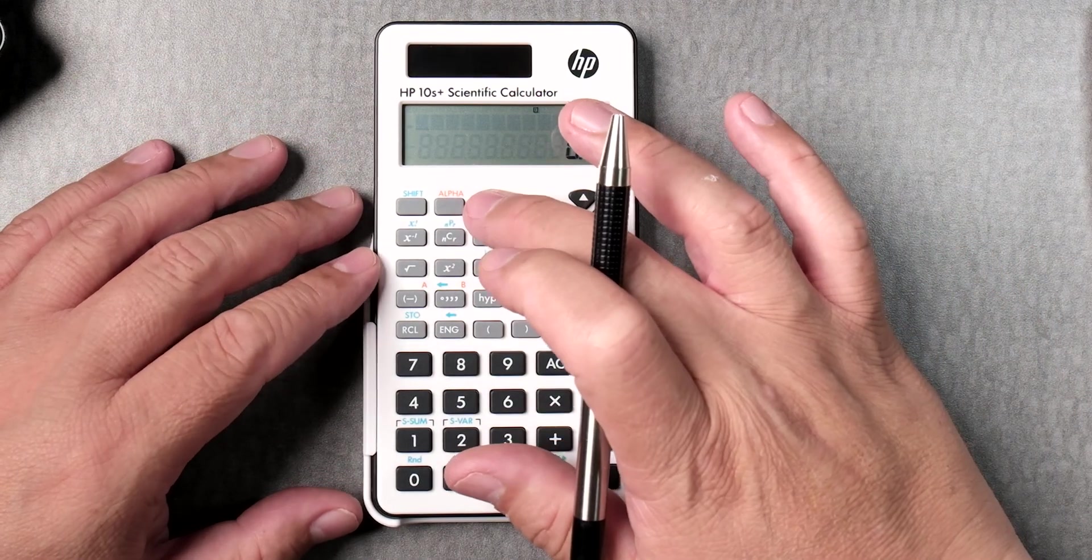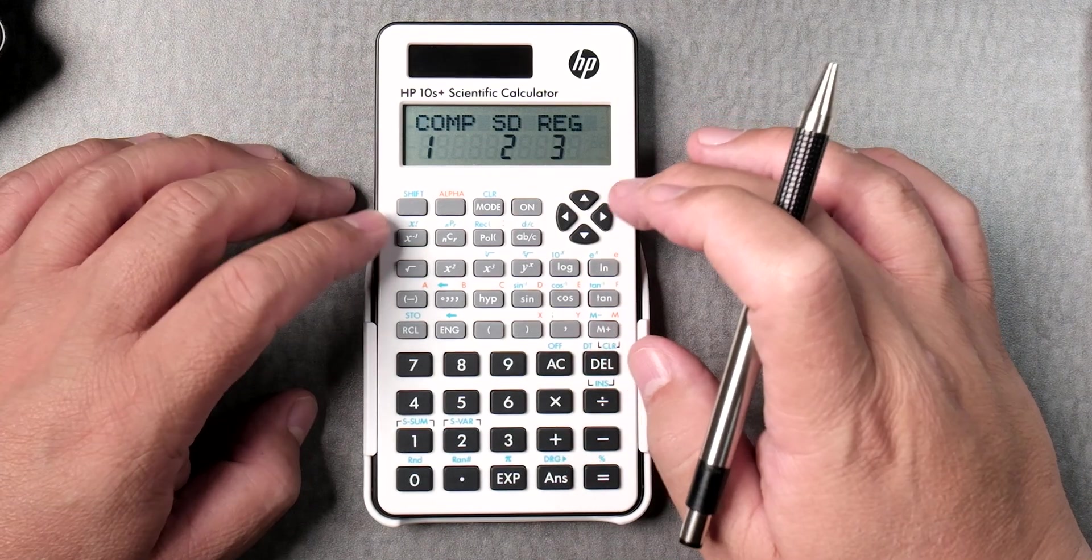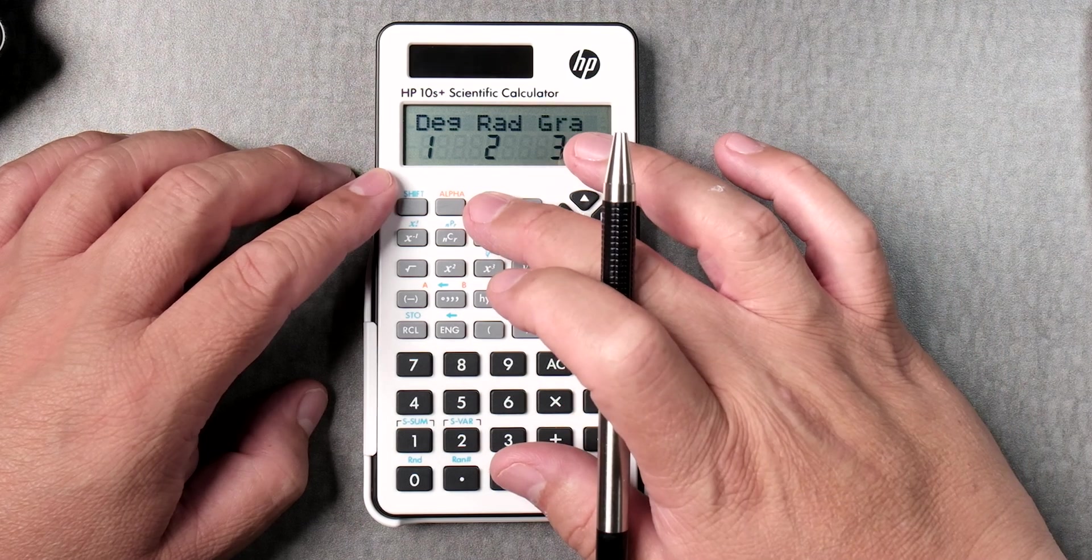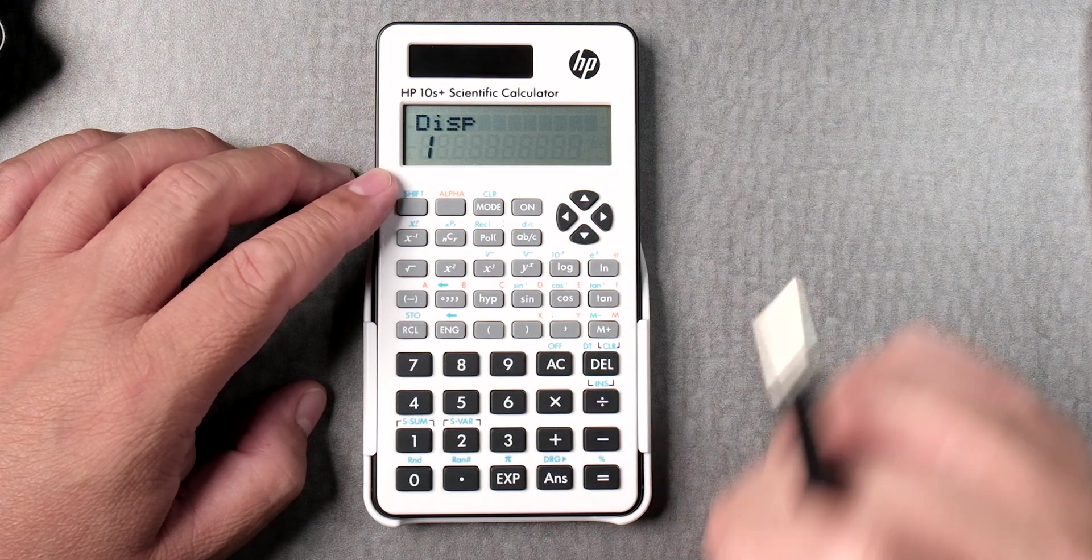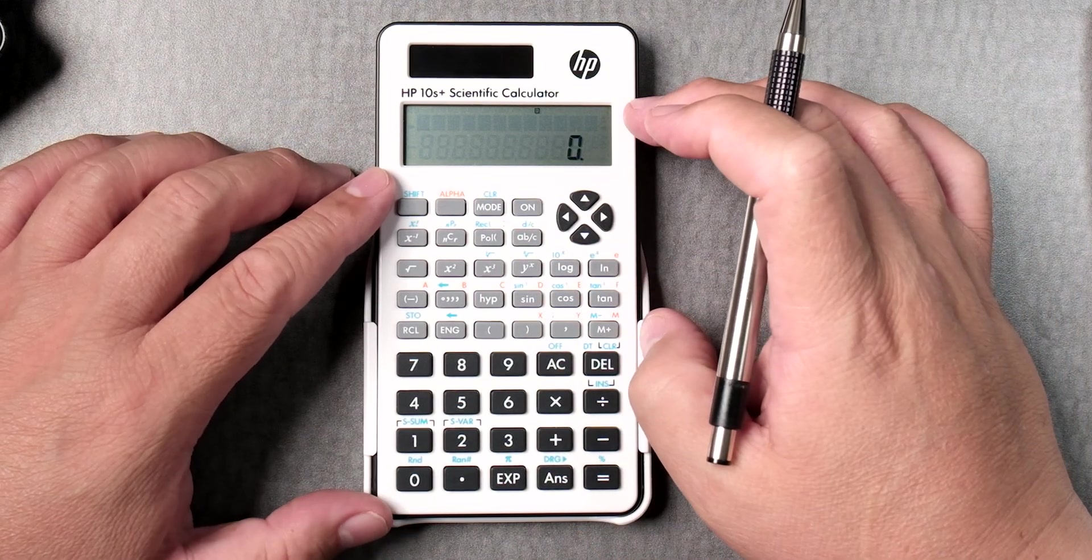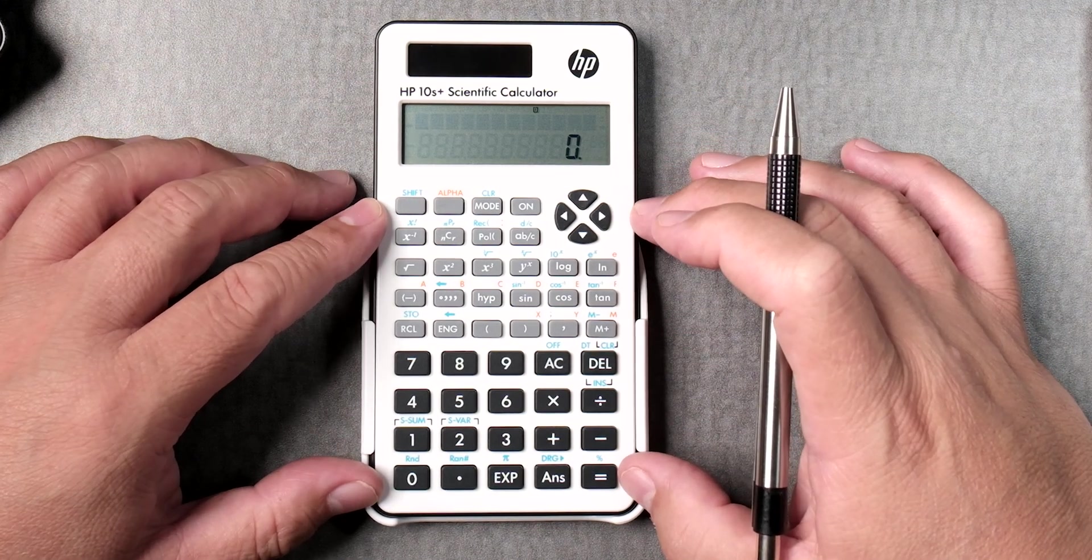There's a mode button here. Top, standard deviation, regression maybe, mode, degrees, radians, grads, fix, psi, norm, and display. Okay, so this has a very similar look and feel as the Casio calculator so far, in terms of the menu.